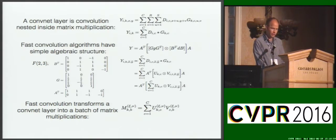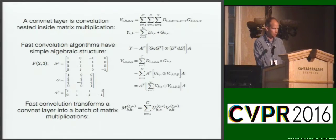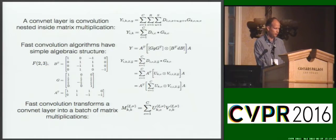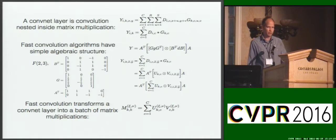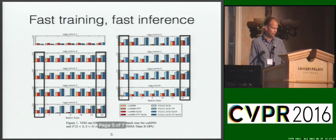A ConvNet layer is basically convolution nested inside of matrix multiplication. If we compute the convolutions with FFT algorithms, we retain the structure of the nesting matrix multiplication, and this yields a fast ConvNet algorithm that is dominated by a batch matrix multiply in transform space. The cost of the transform is amortized over the dimensions of the ConvNet layer. This approach to ConvNet acceleration exploits algebraic structure and is therefore complementary with approximation techniques.